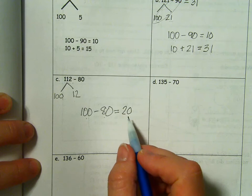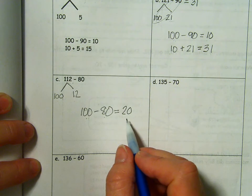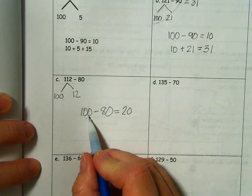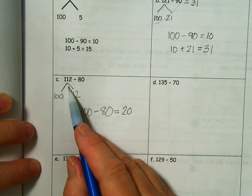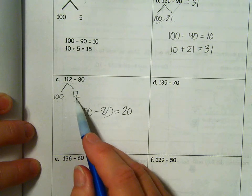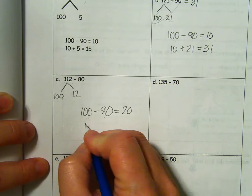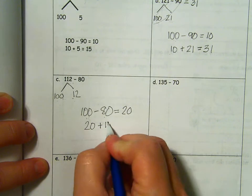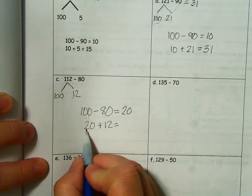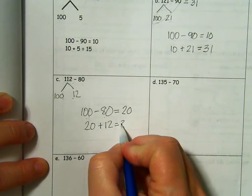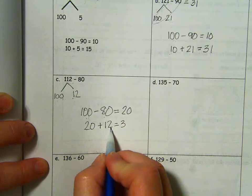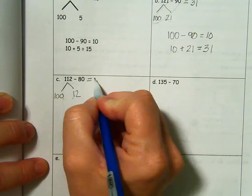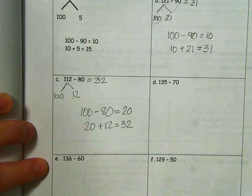Is that the answer? Am I finished? No. We were just subtracting from 100. Now we need to put that 12 back in because we were subtracting from 112. So we are going to have 20 plus 12. 2 tens plus 1 ten. 0 plus 2. 112 minus 80 is 32.